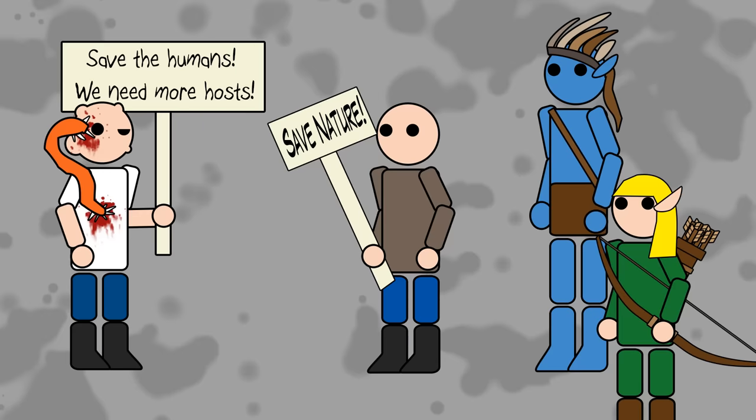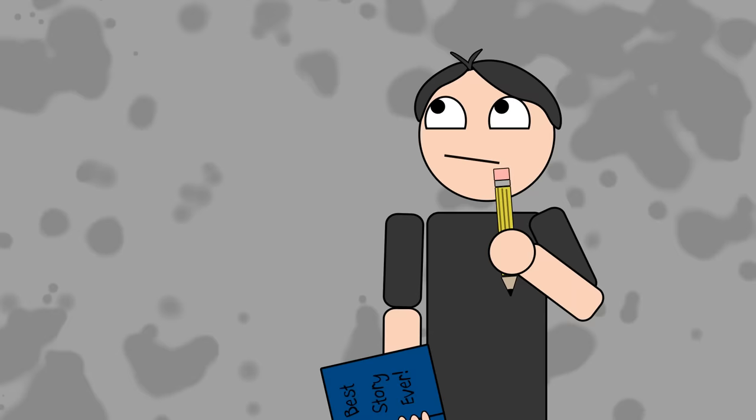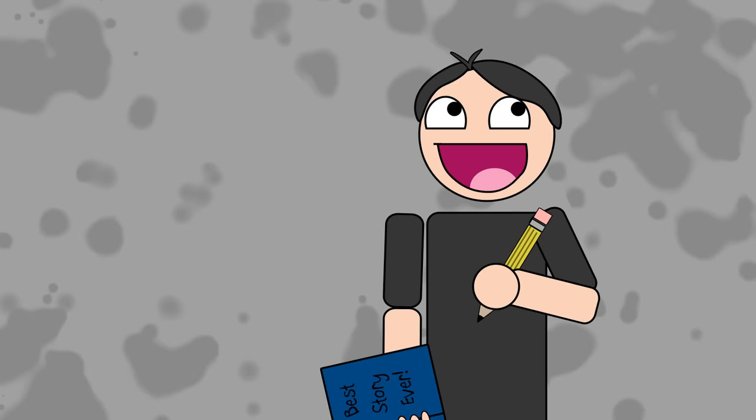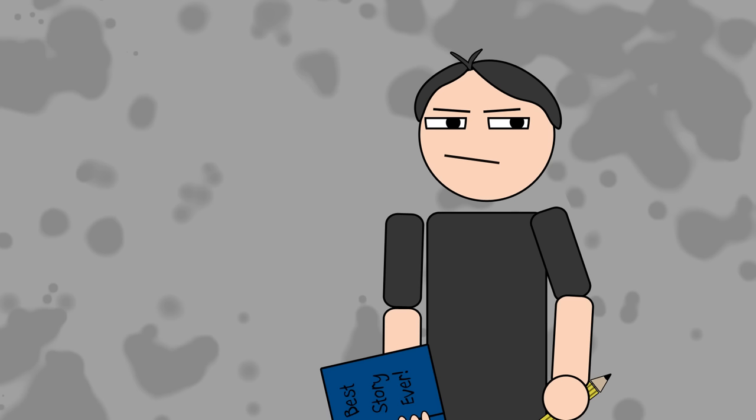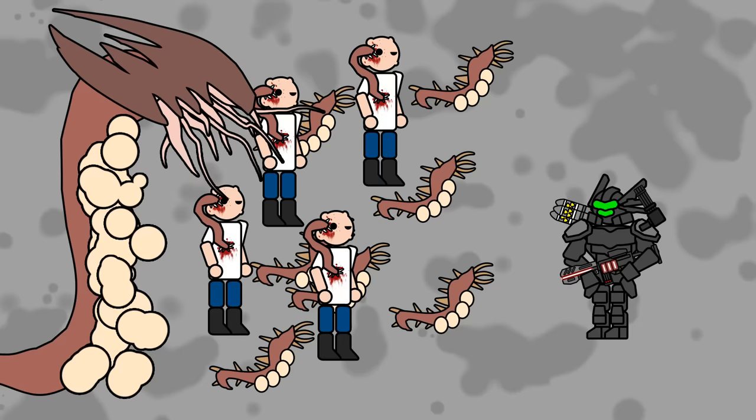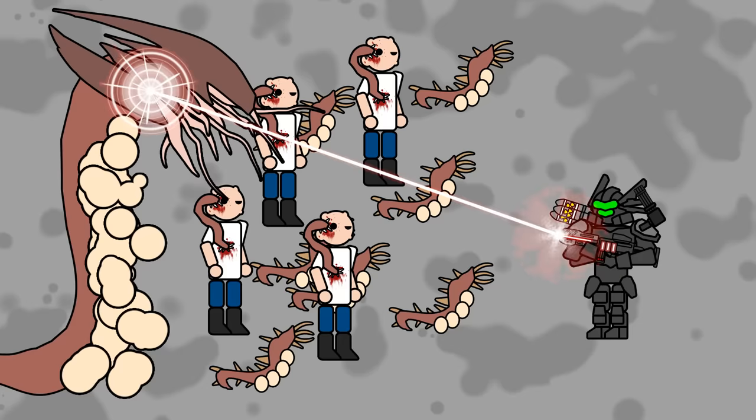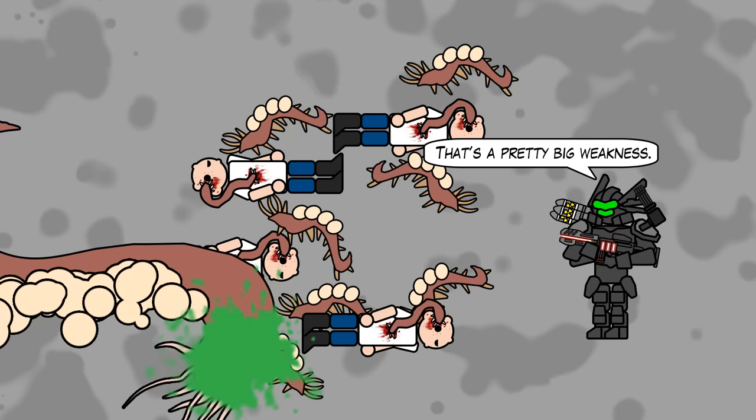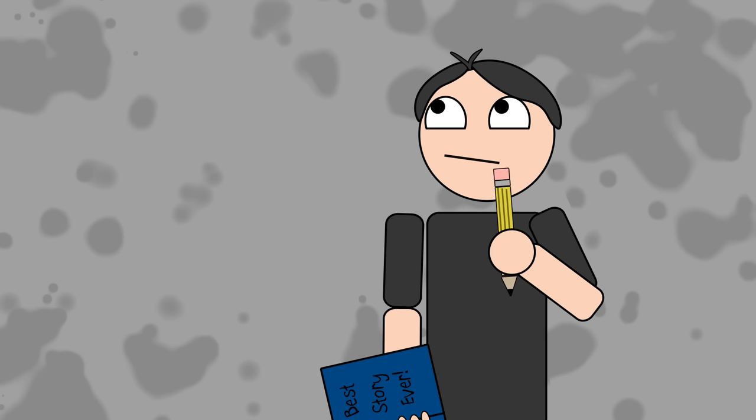Also all alien parasites have at least a 50% chance of being part of a hive mind as well. Now hive minds can be very interesting, but won't be because nearly every video game book or movie portrays them all the same. Hive minds all have a queen and can easily be defeated by killing said queen. But let's think about this for a moment,